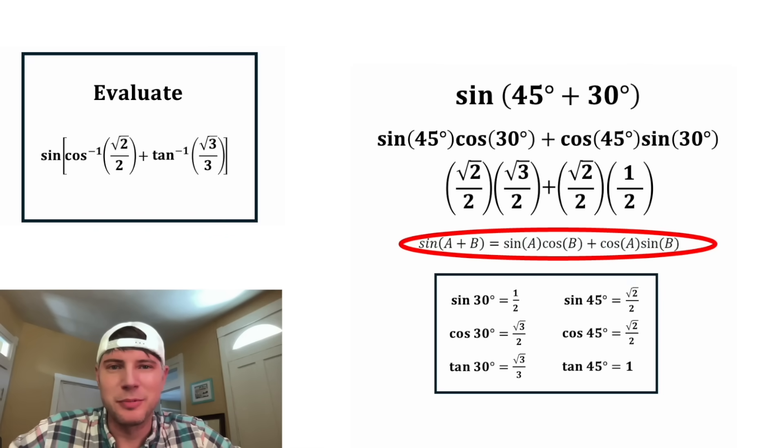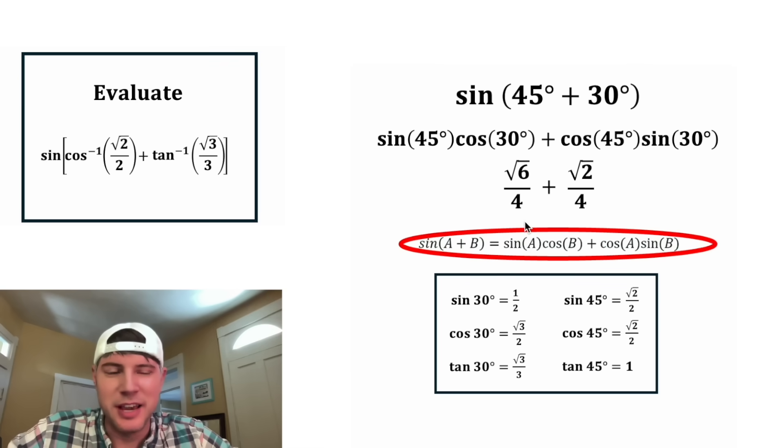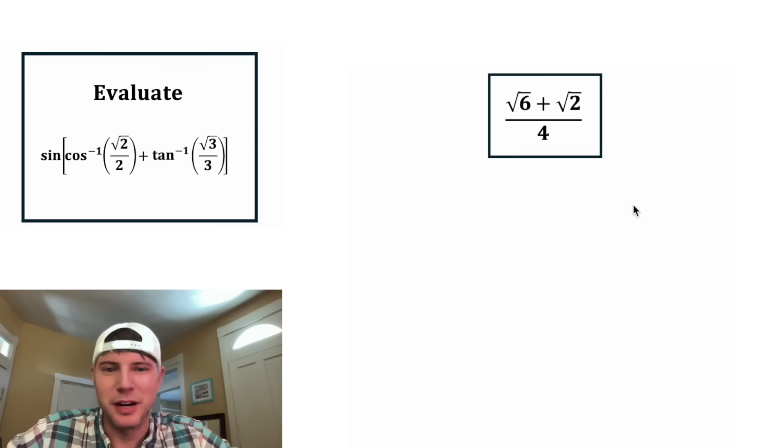And now we can simplify this. Root two times root three is root six, and two times two is four. And then on this side, root two times one is root two, and two times two is four. Now we have two fractions with the same denominator, so we can write them as a single fraction with that denominator. This is the answer to our question. Let's put a box around it. This evaluated is square root of six plus square root of two over four. How exciting.